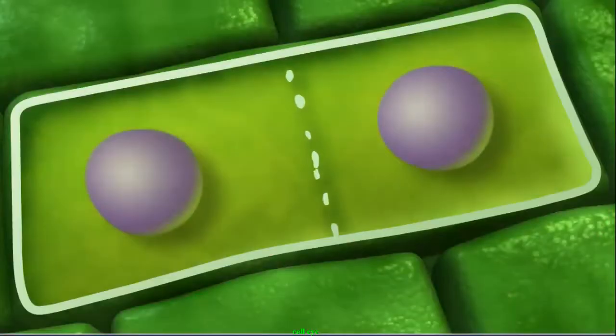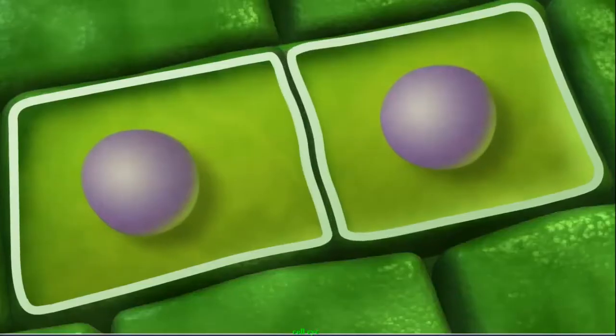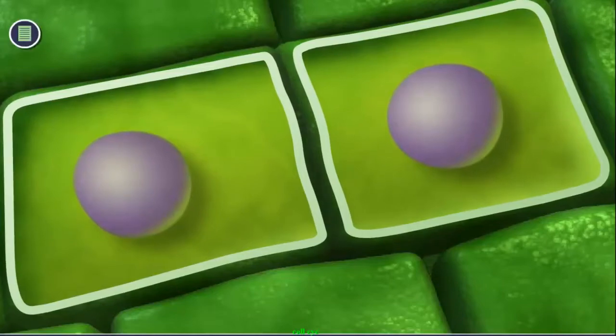Since plant cell walls cannot be constricted by actin fibers, vesicles form an expanding membrane partition called the cell plate. Like animal cells, plant cells use cytokinesis to finish the division of the contents of the cytoplasm between the two identical daughter cells.